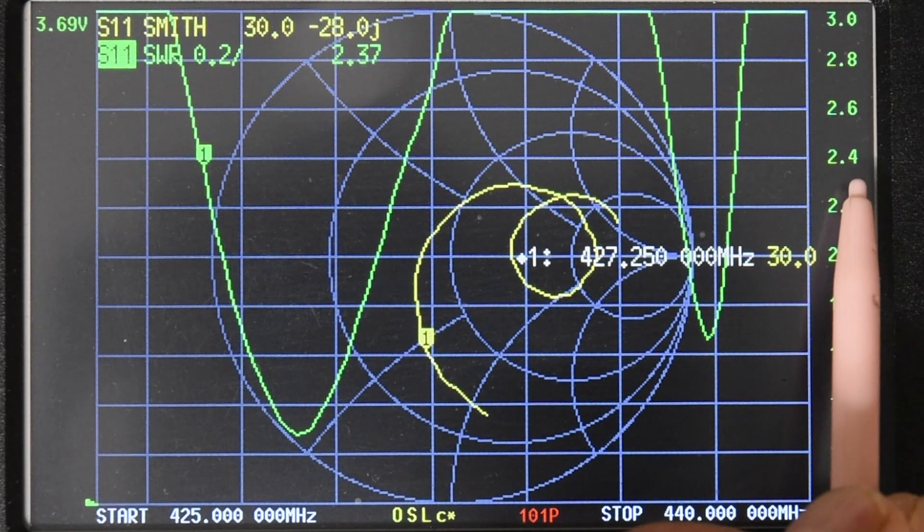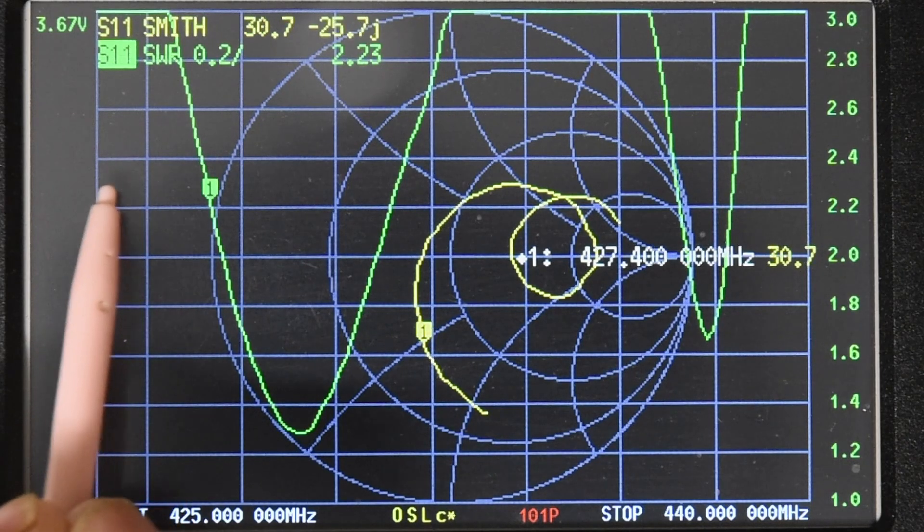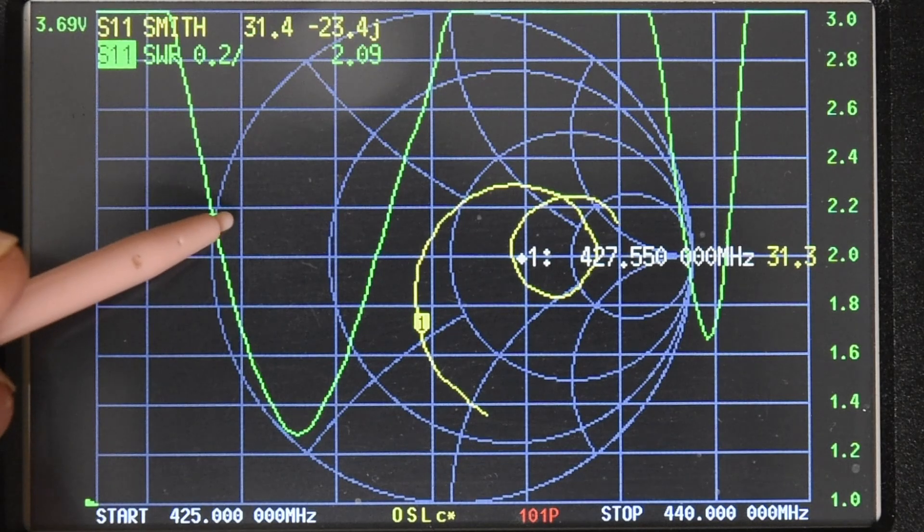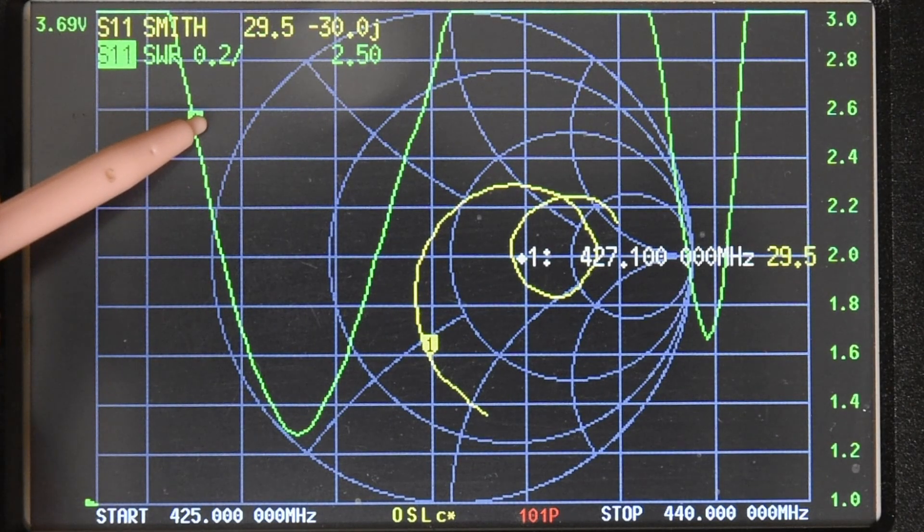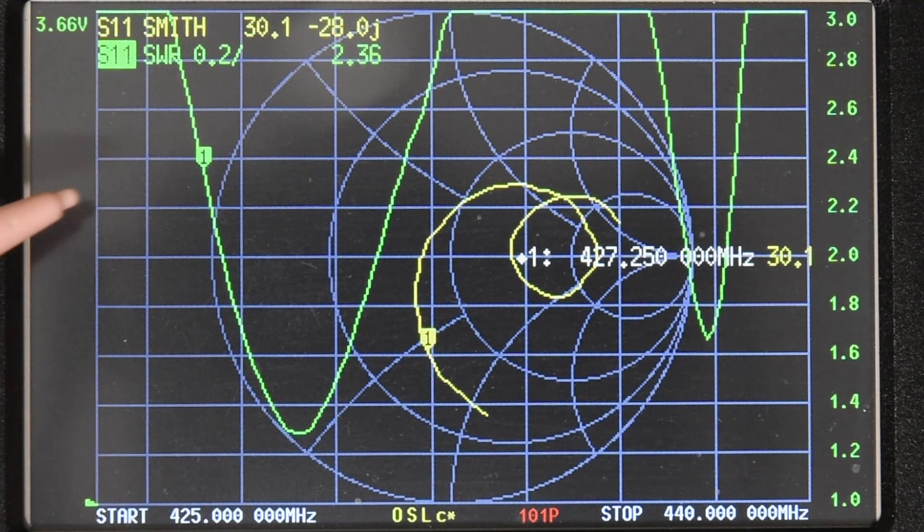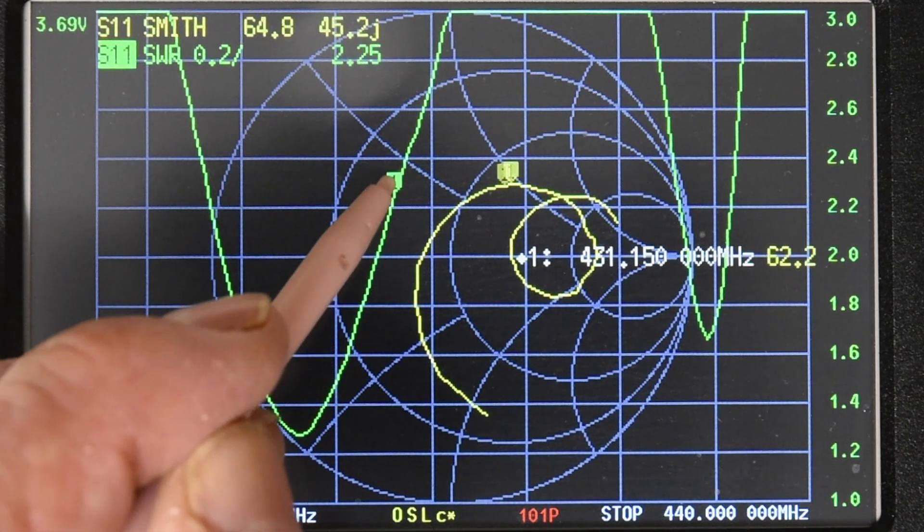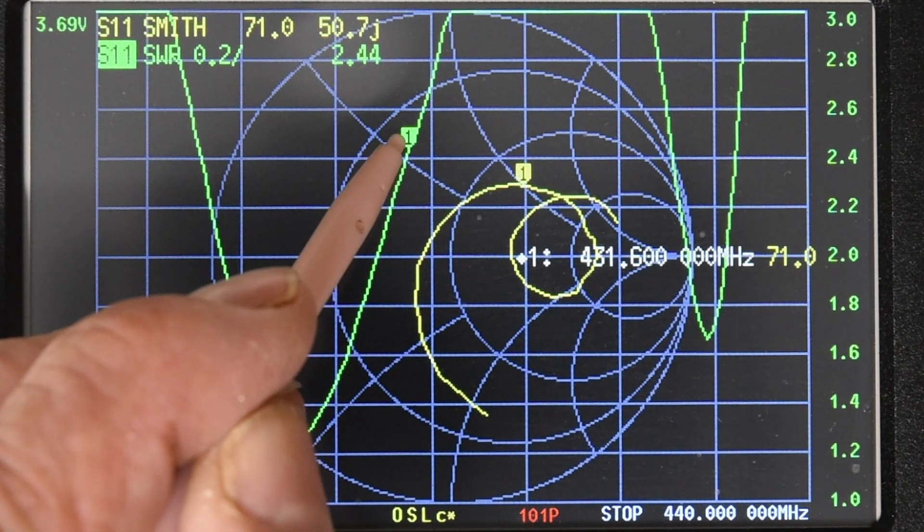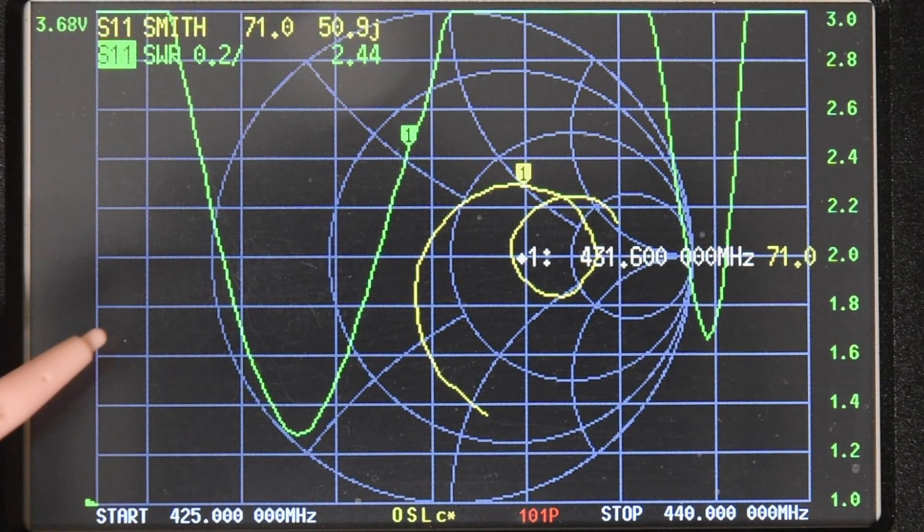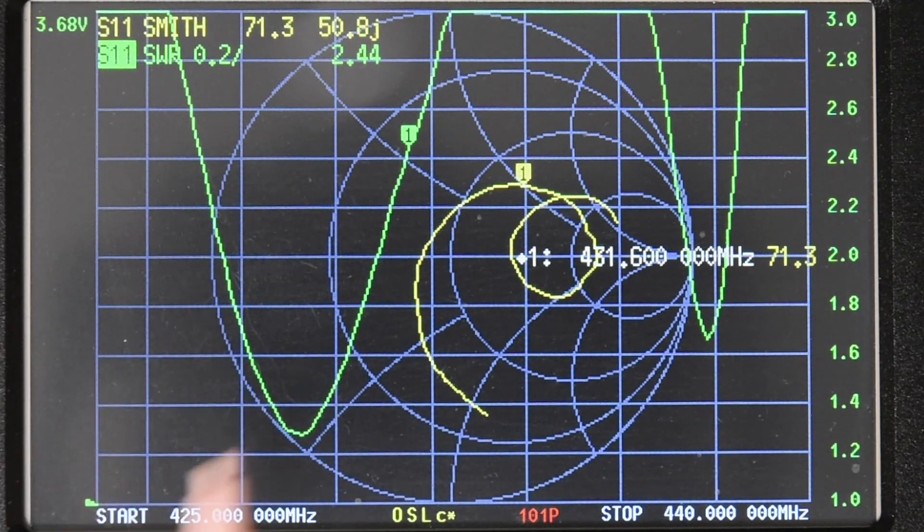So we really want to be I think below 2.5 which is giving us a bandwidth. I'll see if we can grab it. 2.5 being about there that's 427 megahertz to 431.